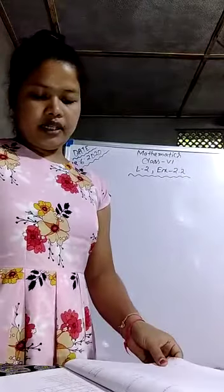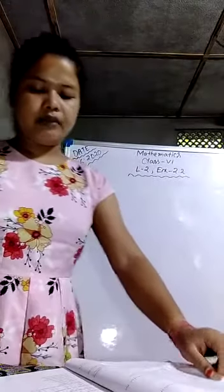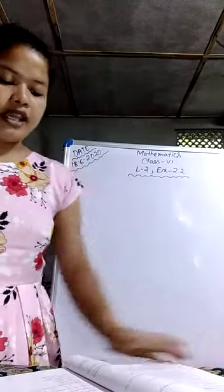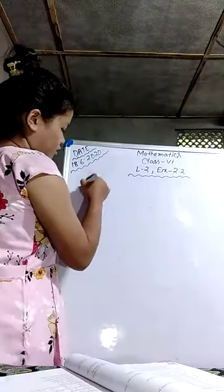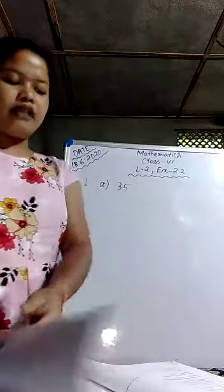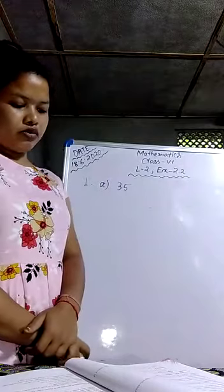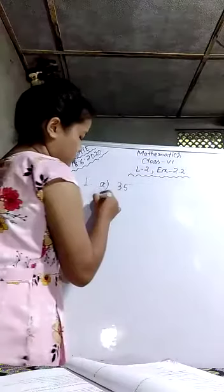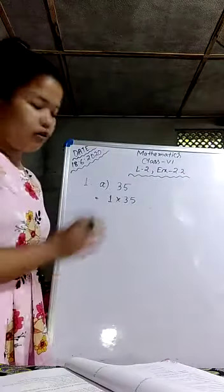In this question, they are not mentioning to follow any one method, so we can use any method — multiplication or division. I will do the multiplication method. Question number 1 is 35. We have to find the factors of 35. By using the multiplication method, we have to find the numbers whose product is 35. So, 1 multiplied by 35 is 35, so 1 and 35 are factors of 35.